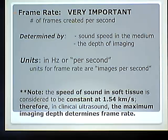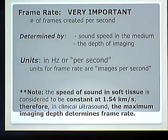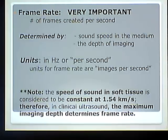To understand all this, we have to break it apart. Movies are made up of a bunch of frames or pictures shown at a specific rate. Remember in high school drawing the little stick man running at the corner of the book — the faster you flick those pages, the more fluid the stick figure looked running. If you flicked slowly, it was that herky-jerky, choppy movement. That all has to do with the frame rate. The frame rate is the number of frames created per second. It is determined by two things: the sound speed in the medium and the depth of imaging.